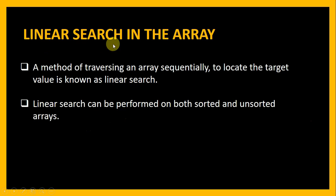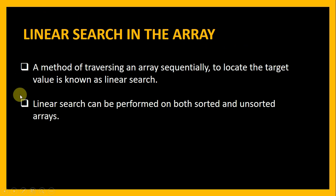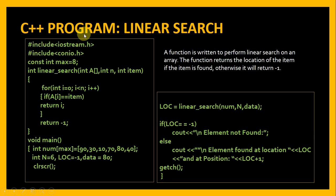Now let us see what is linear search. It is a method of traversing an array sequentially to locate the target value. In this method we go to each and every element of the array to locate the target value and if it is found, we return the location. Linear search can be performed on both sorted and unsorted arrays.